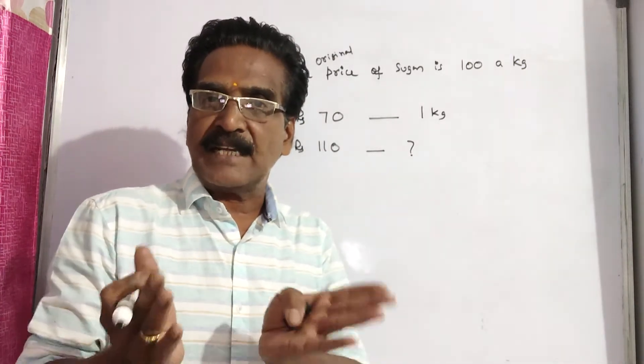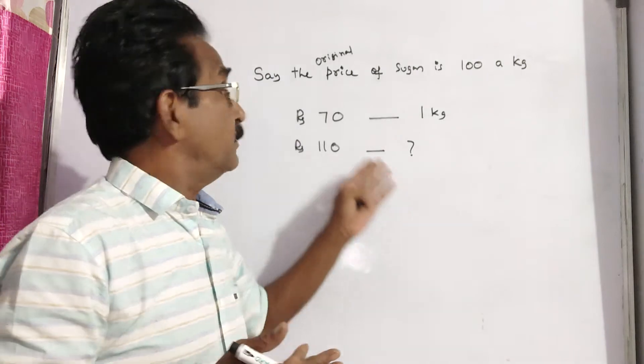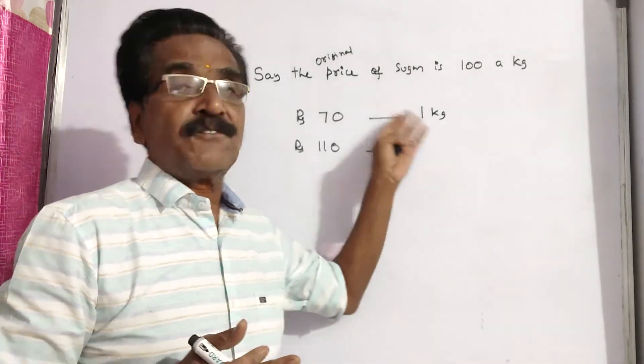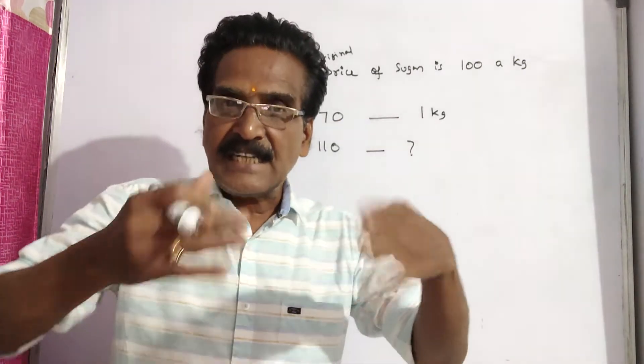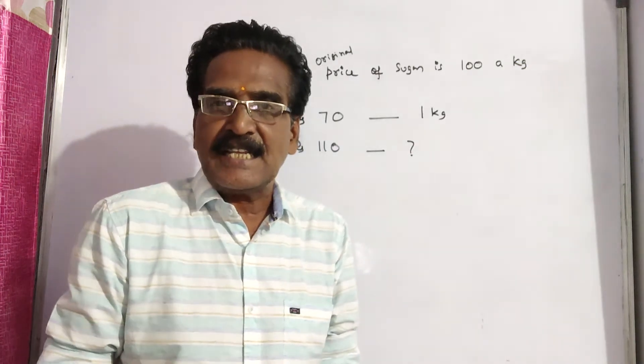So, how much sugar will he get for 110 rupees if he is getting one kg of sugar for rupees 70? That is the increase in the consumption.